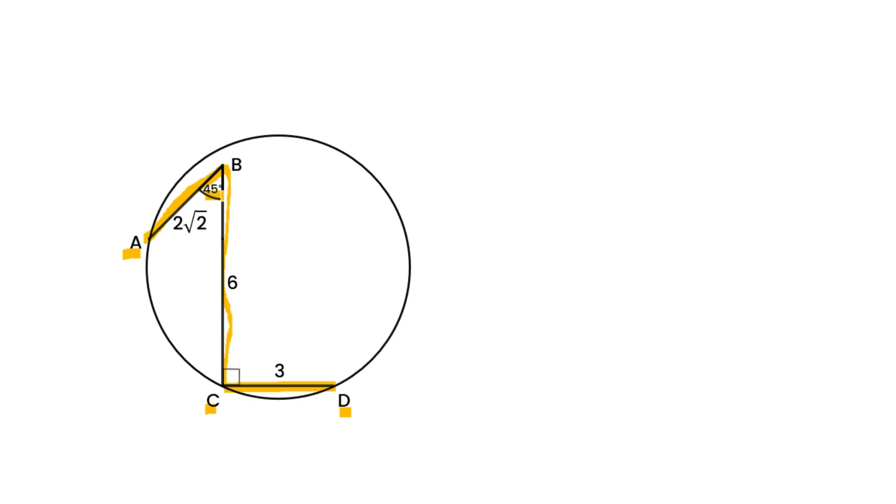Angle B is 45 degrees and angle C is a right angle. So, what's the value of the radius?